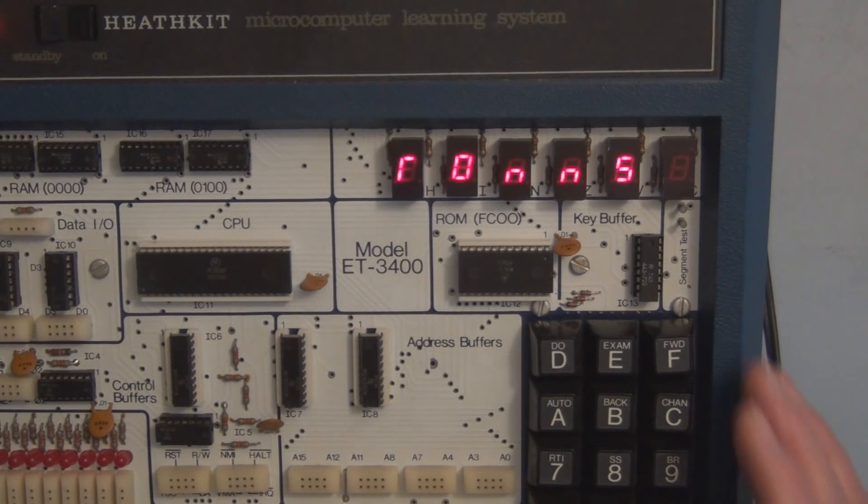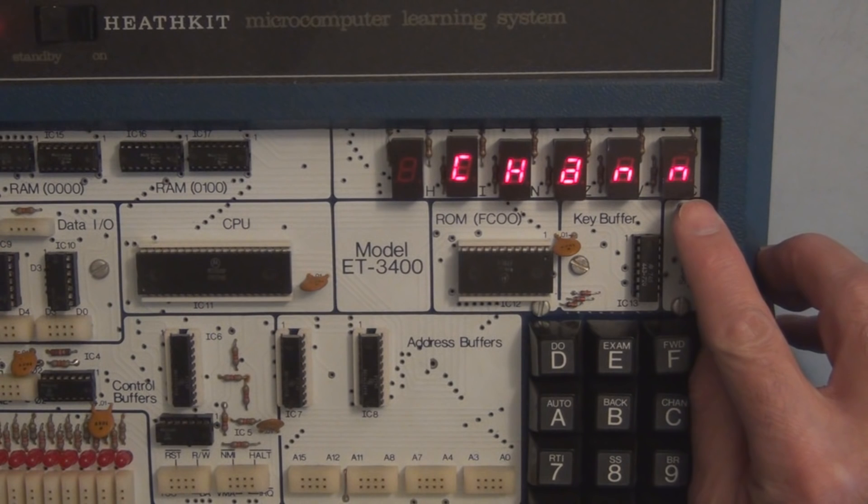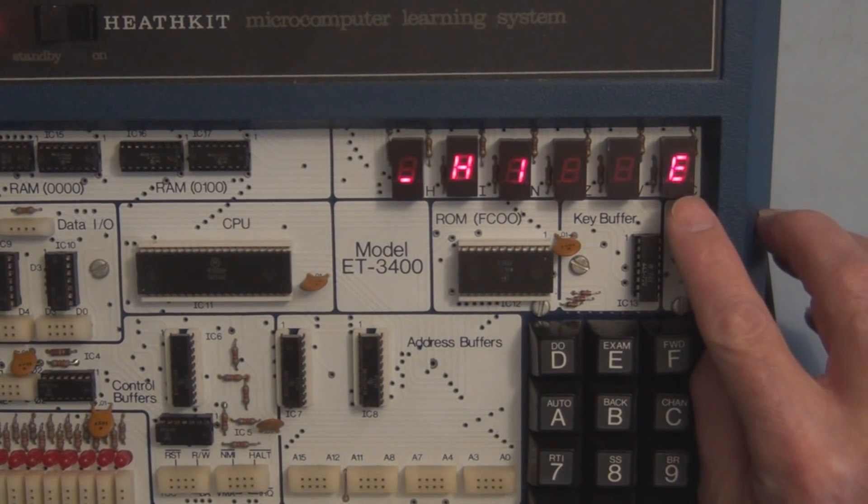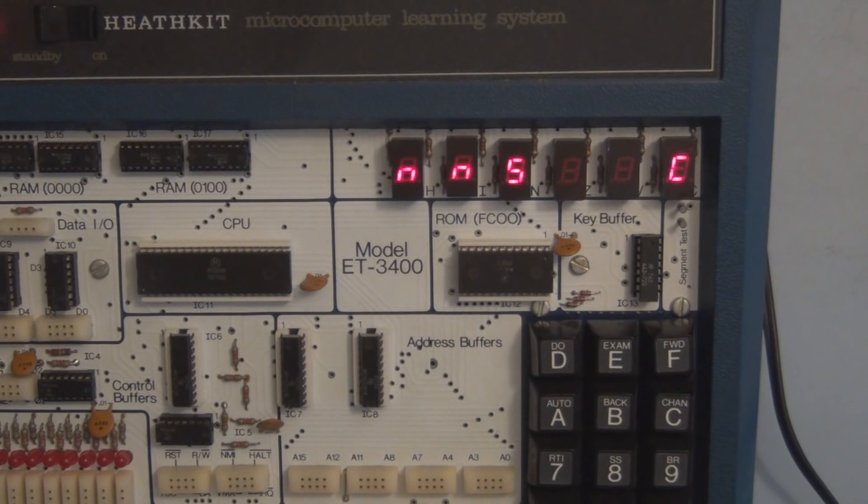So I hope that gave you a little insight into how these individual segments are being lit by storing a binary number, and in particular a 1 and a 0 in the correct bit location to turn on and off each individual segment to create a character. And luckily we're able to enter in the binary information with the hexadecimal keypad and not having to enter in 1s and 0s.